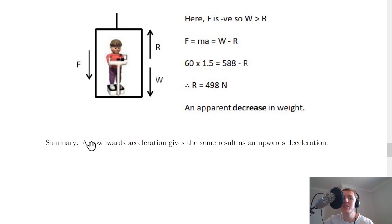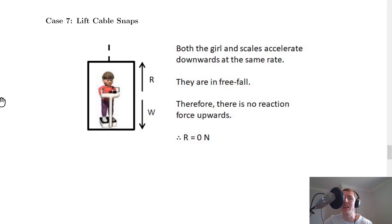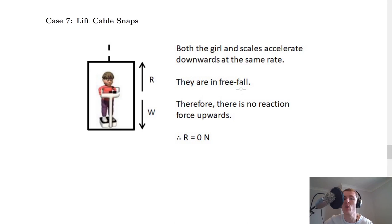Case 7: the lift cable snaps. Both the girl and the scales accelerate downwards at the same rate — they are in free fall, experiencing only the force of gravity. Since both are falling together, there is no reaction force between the person and the scales, so R = 0 newtons. It's as if the scales are moving out from beneath you.